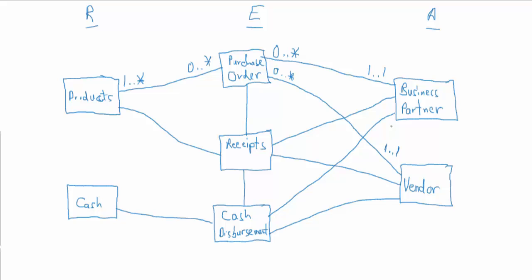Receipts are going to work pretty much the same way that purchase orders did. Each receipt is going to be of at least one product, up to many. We may have products we never receive, mainly because we didn't purchase them, or even if we did create a purchase order, we may never receive it — but hopefully we'll receive products many times. Receipts will be associated with one and only one business partner, and one and only one vendor, each of which may be associated with zero up to many goods receipts.